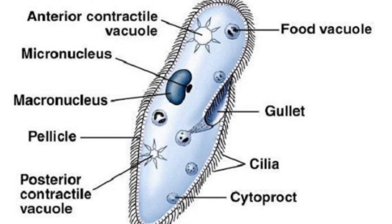Paramecium and volvox both reproduce asexually and sexually and live in moist environments. They also have many differences, especially in how they move, eat, and are shaped. Volvox use flagella, while paramecium have cilia, which are small, hair-like extensions. Also, paramecium are oval-shaped, almost like a slipper, and are clear. Finally, paramecium are only heterotrophs, which means they only eat other organisms, using their cilia to drag microbes into their oral groove.